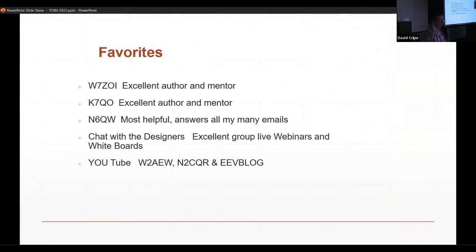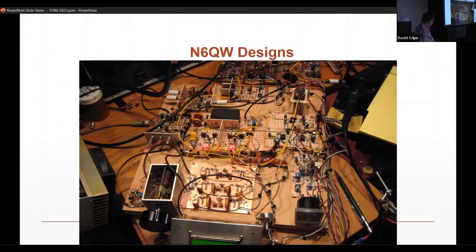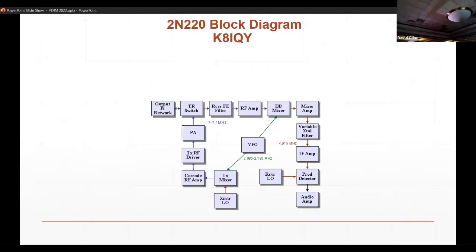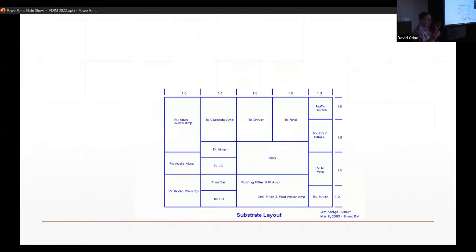Some of my favorite people: ZOI, QO, N6QW. If you don't know this guy, Pete Giuliani, you're missing a bet here. This guy is the most prolific radio builder I know of, and not only that, he answers every single one of my emails to him about stuff. This is one of N6QW's designs. He must have built 30 of these kinds of things over his lifetime. This guy, K-A-Q-Y, Jim Kirchey, came up with something called a 2N220. It was part of a contest from many years ago.